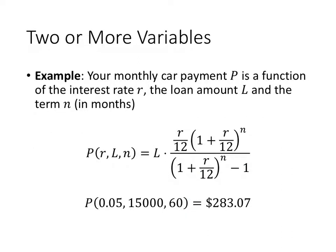If we want to evaluate this function, we need a value for each of those variables. So in this example, we're computing the monthly car payment for a 5% interest rate loan of $15,000 for a period of 60 months. And we get that our monthly car payment would be $283.07.